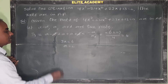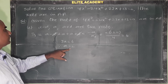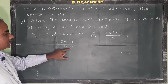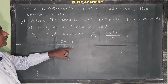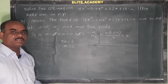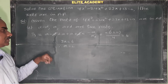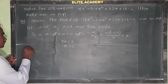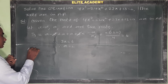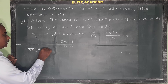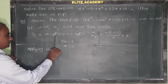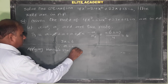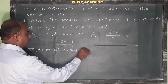We now have one root: a equals 2, meaning x equals 2 is a root of this equation. To find the remaining two roots, we apply Horner's synthetic division method.